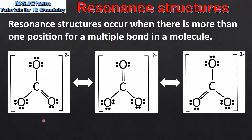In the case of the carbonate ion there are three possible Lewis structures, each one with a carbon to oxygen double bond in a different position. Therefore, there are three resonance structures. However, none of these Lewis structures accurately represent the actual structure of the carbonate ion, which we'll look at next.